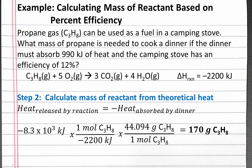Completing this calculation, we get 170 grams of propane. So by burning 170 grams of propane, our dinner should be able to absorb 990 kJ of heat, taking into account an efficiency of only 12%.